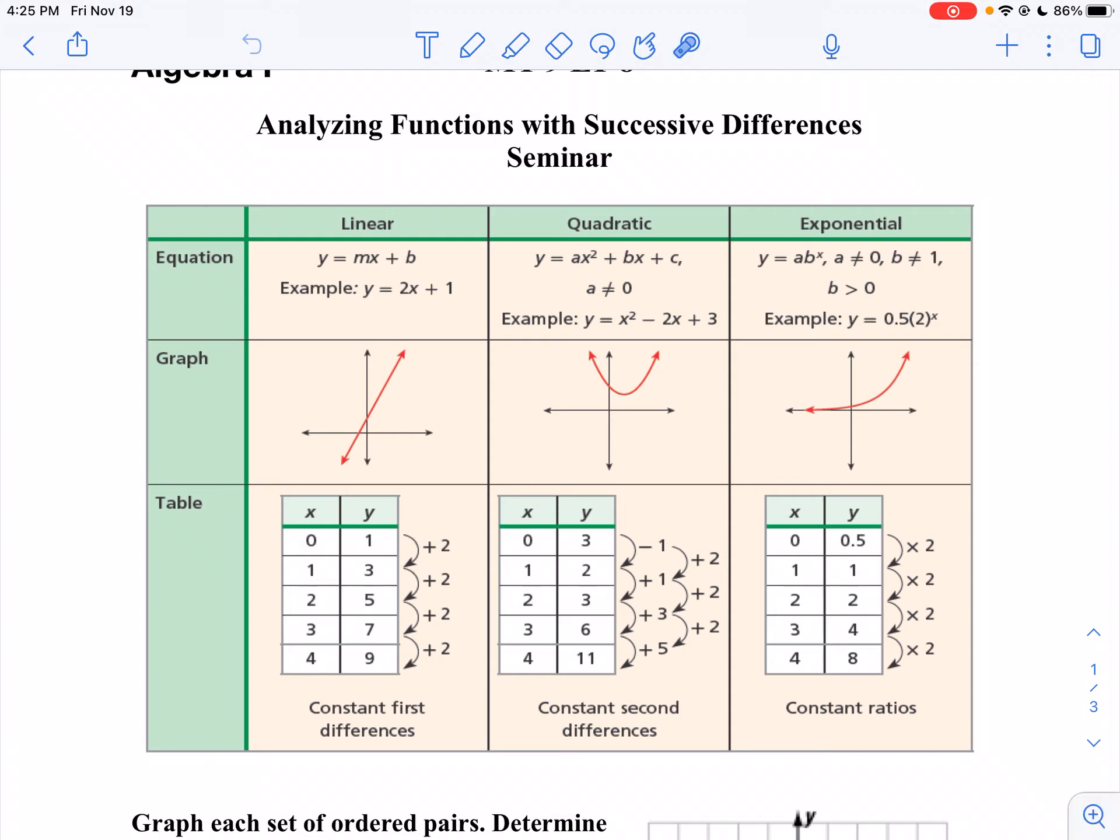First off, if you're given an equation, the way to tell it's linear is going to be the form of y equals mx plus b, or it might be in standard form like ax plus by equals c. If it's quadratic, it's going to have a square term. And if it's exponential, your exponent is going to be in the variable.